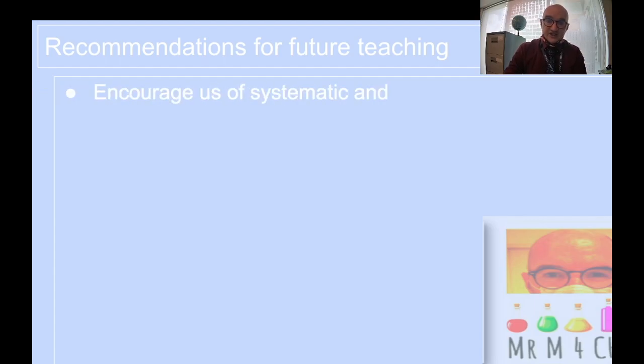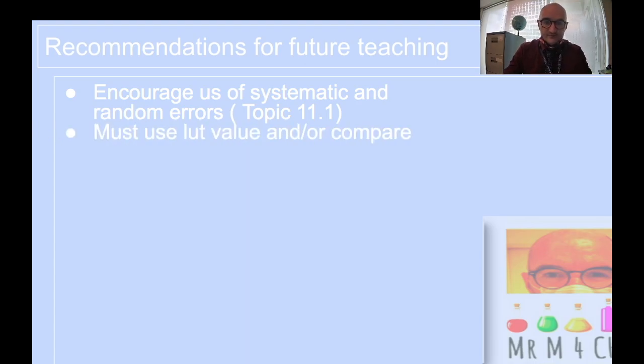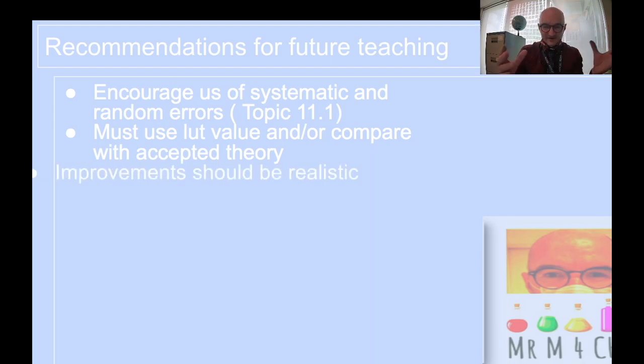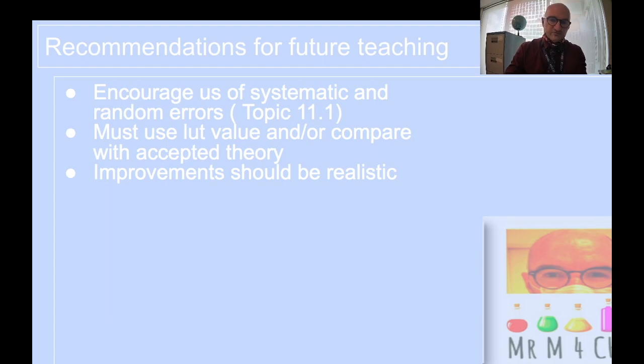So future teaching, the suggesting that we should all be using systematic and random errors. When I said this in one of my previous videos, a lot of people emailed me and said, that's unfair. That's nowhere in the syllabus. Check topic 11.1. You'll find it. You must use literature value or compare it with some other accepted theory or calculate it using bond energies or delta G or all these things are related. It's always in kinetics or in energetics or redox. You can find these things. Look for them. Improvements should be realistic. No one has a magic wand. We appreciate that. And just drop the title pages, indices, and content pages. Nobody cares. Stop doing it.